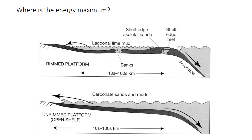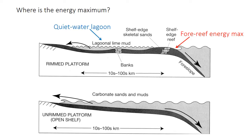As with any depositional system, the distribution of energy is a critically important factor controlling the distribution of lithologies and facies across the environment. In a rimmed platform, the shelf-edge reefs or shoals act as a barrier, and wave energy gets focused by the abruptly shallowing platform margin, leading to an energy maximum at the platform edge. The interior of the platform is protected from waves by the shoals or reefs, creating a quiet-water lagoon environment where carbonate mud and finer-grained sediments accumulate. Even unrimmed platforms have an energy maximum at the margins due to this wave focusing.